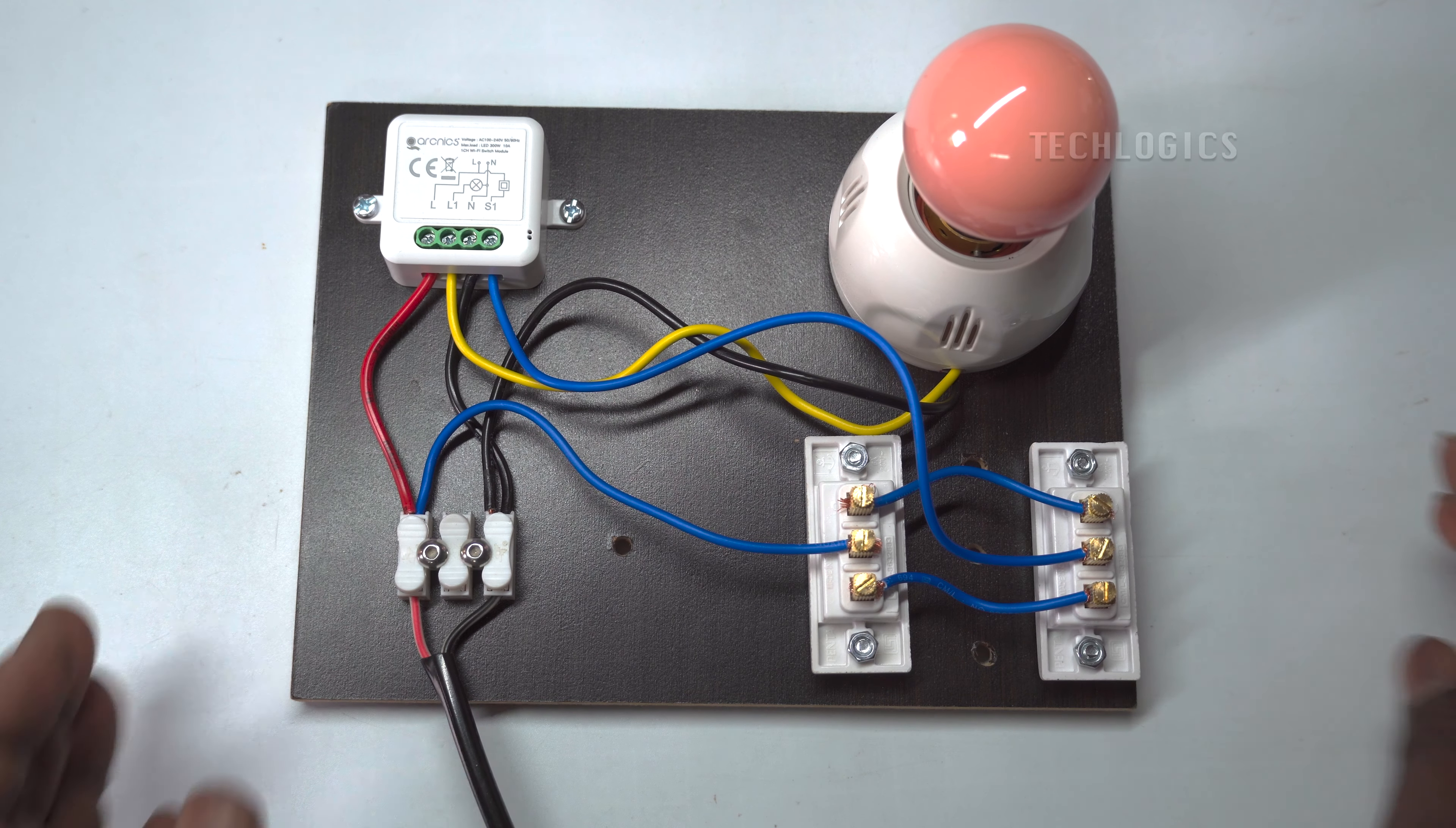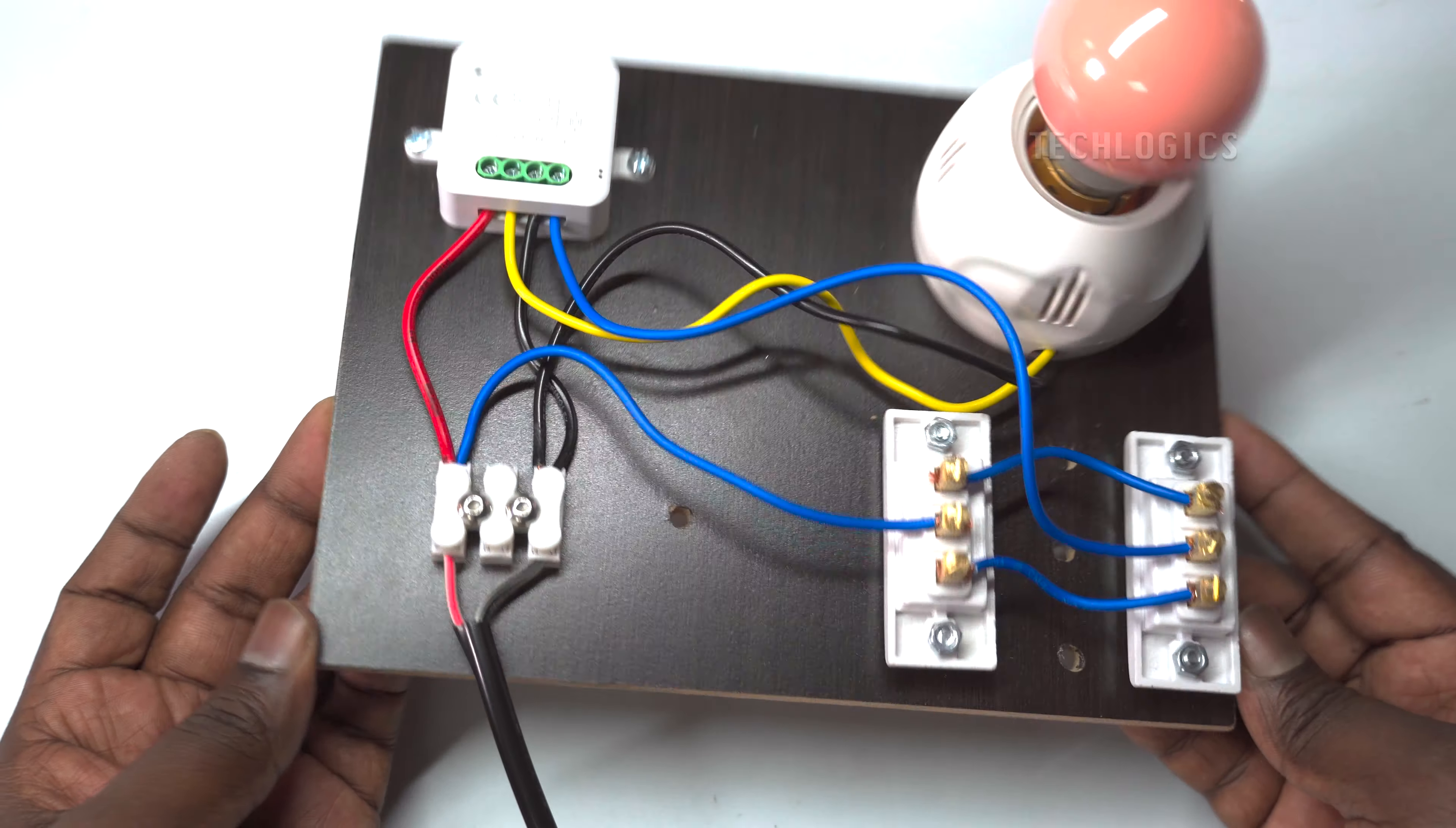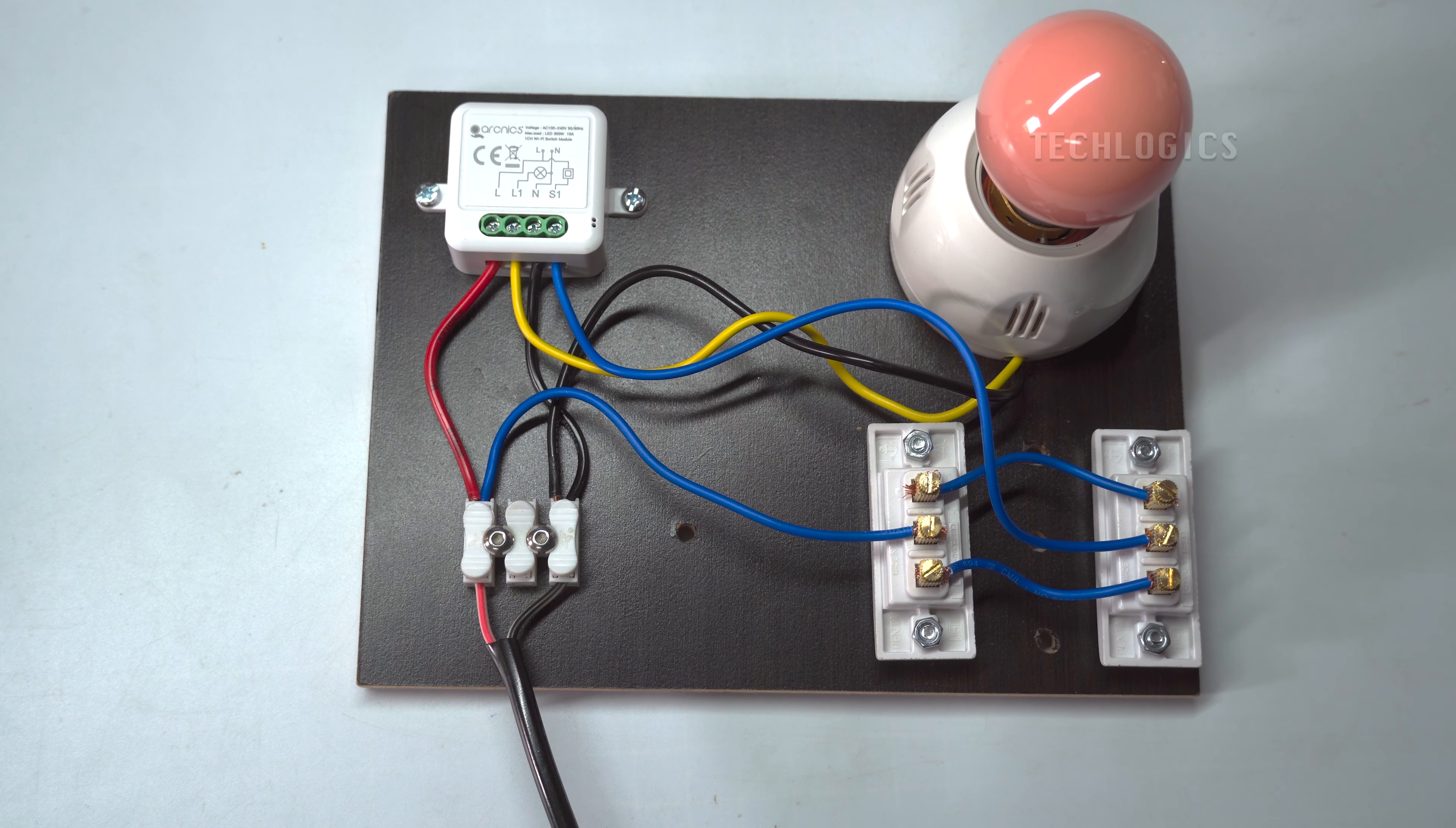That's it. We have successfully connected two switches to control the same light using a 2 Yaw smart life switch. Now, it's time to turn on the main power to test the connection. Let's see if everything is working as expected.